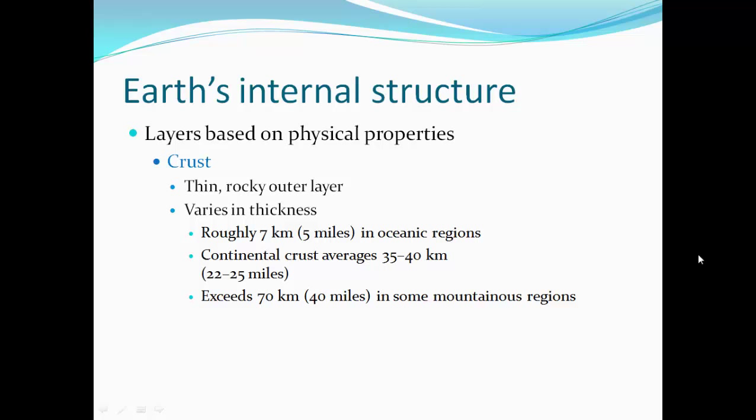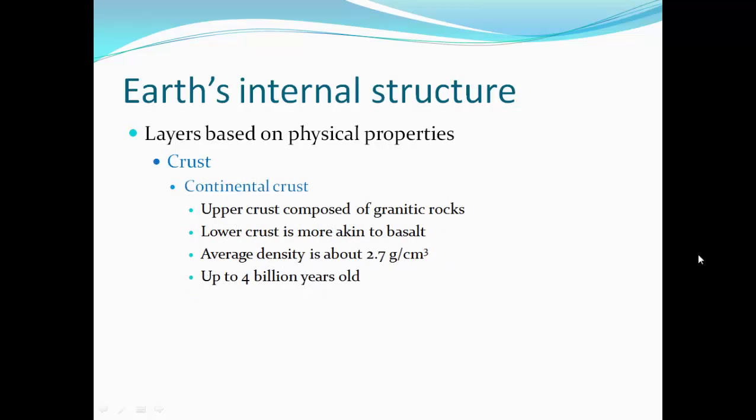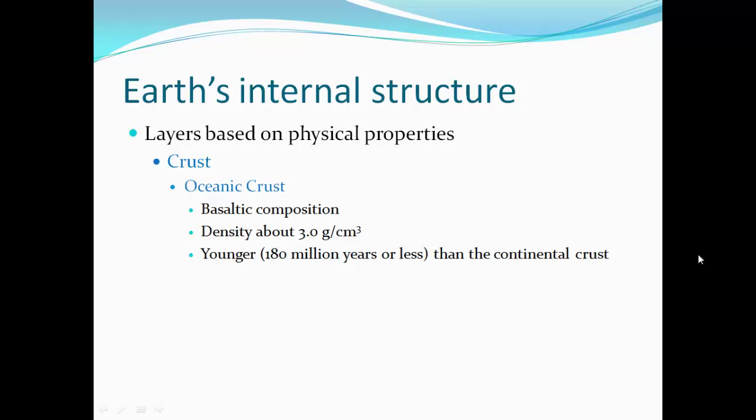Based on physical properties, here is Earth's interior structure. The crust is a thin rocky outer layer varying in thickness — roughly 5 miles thick in oceanic regions, 22 to 25 miles thick in continental areas, and up to 40 miles thick under some mountain ranges. The continental crust has an upper portion of granitic rocks and a lower portion more like basaltic rocks, with an average density of about 2.7 g/cm³, and can be up to 4 billion years old. Oceanic crust is basaltic, denser (about 3.0 g/cm³), and much younger — 180 million years old or less.